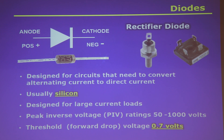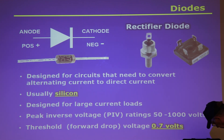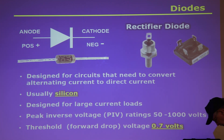Diodes are really good for us. They allow us to turn AC into DC, and they also allow us to detect radio signals. Rectifier diodes are big ones — their job is to do AC to DC. Small signal diodes are ones usually used in radios to detect radio signals. They're designed for circuits that need to convert alternating current to direct current. Rectifier diodes are usually silicon, designed for large current loads. The peak inverse voltage is rated from 50 to 1,000 volts.